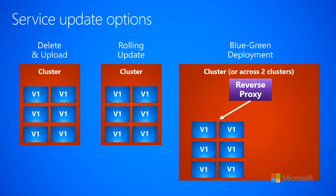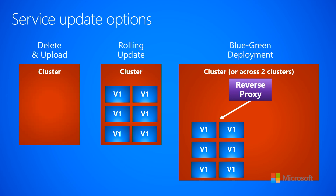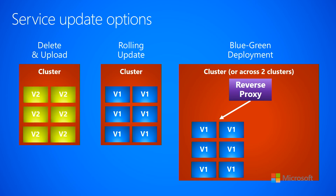The first mechanism is delete and upload. What I show here on the left is a cluster, and in the cluster it's running six instances of version one of your code. Now you have version two ready to go. One option is you could go to the orchestrator and tell it to bring down all six service instances, and then deploy a whole new set of six instances that are now version two.